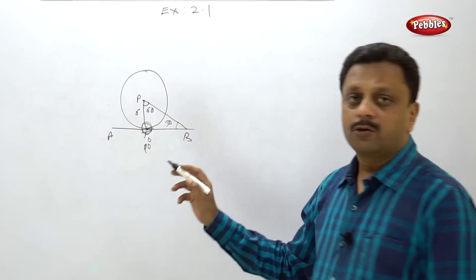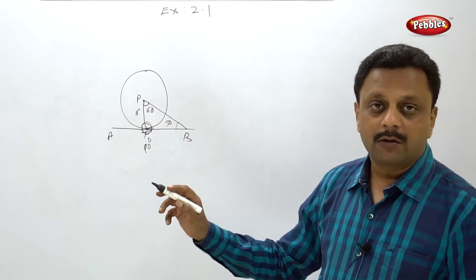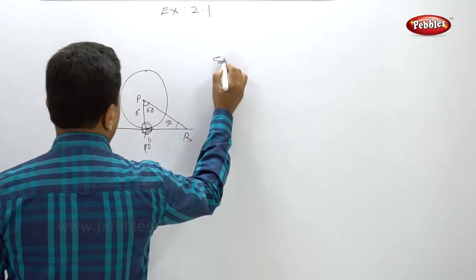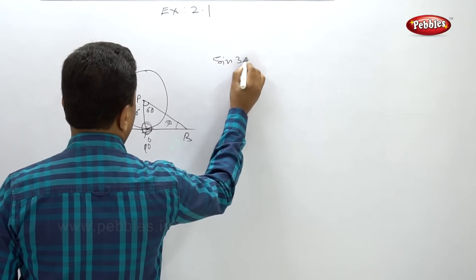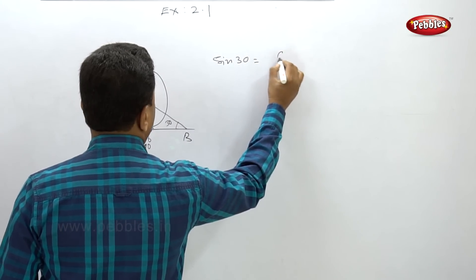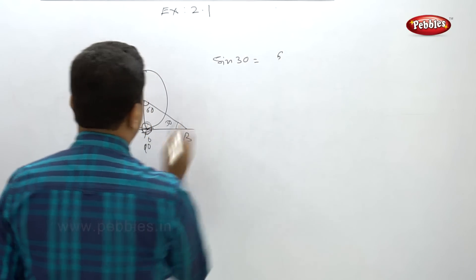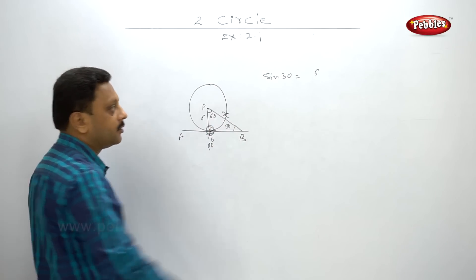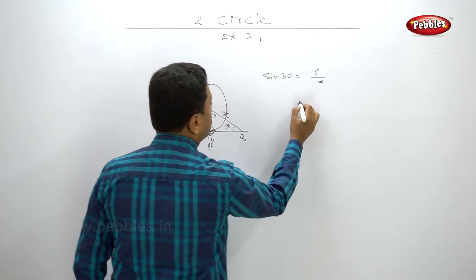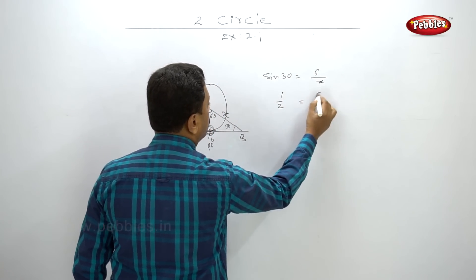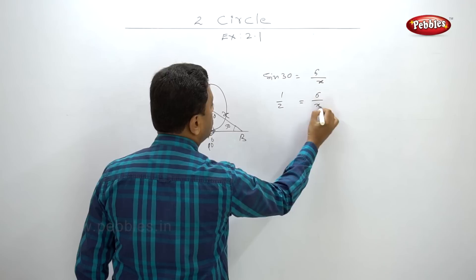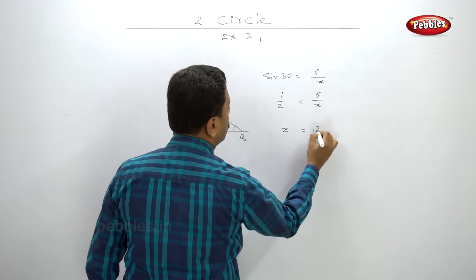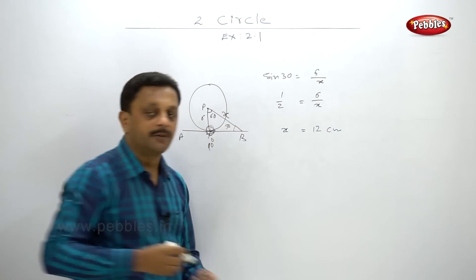I want to find PB, so I will use sine 30. I will write: sine 30 equals 6 upon X. Sine 30 is equal to 1 by 2, which equals 6 upon X. So X is equal to 12 centimeters.